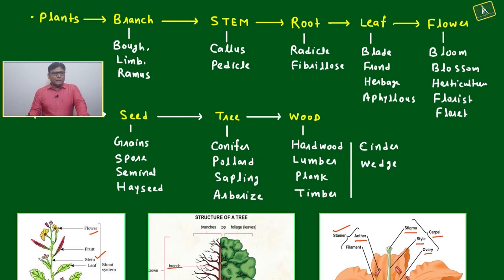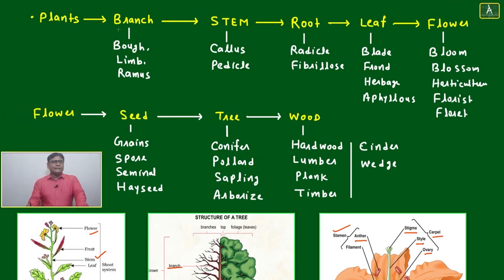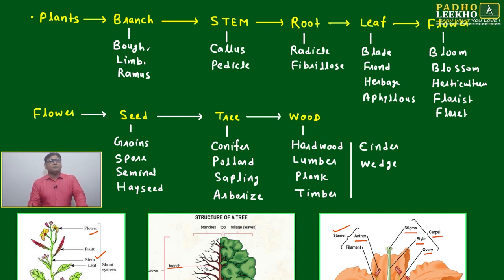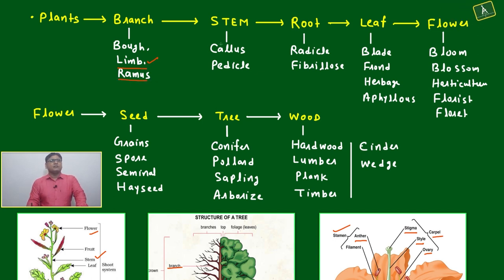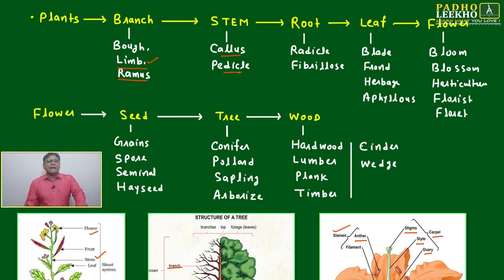Now let's go into a little more detail. For 'branch,' the well-known alternative names are 'limb' or sometimes 'bole.' For 'stem,' the alternative names are 'callus' and 'pedicel.'